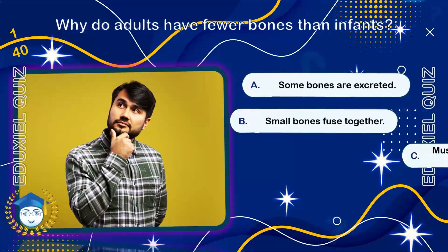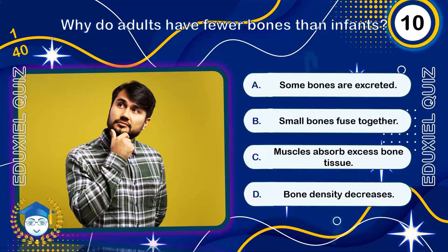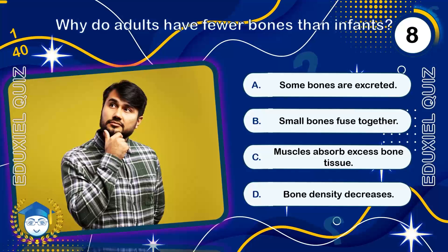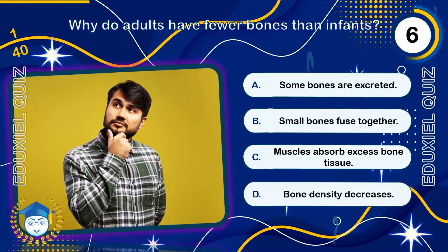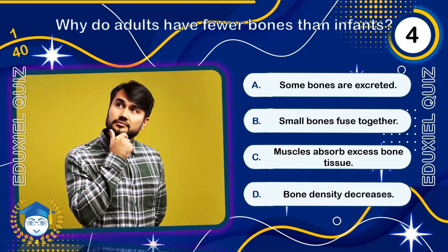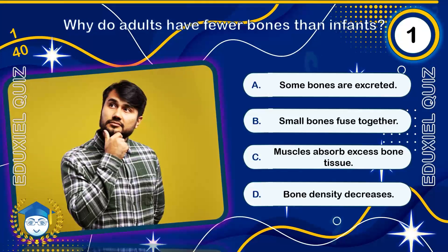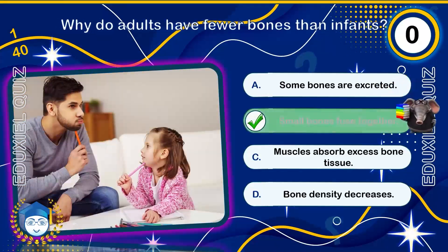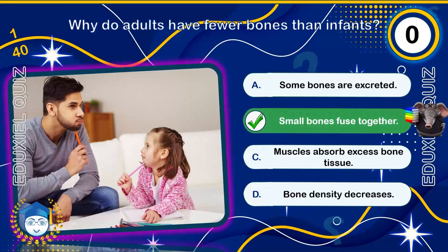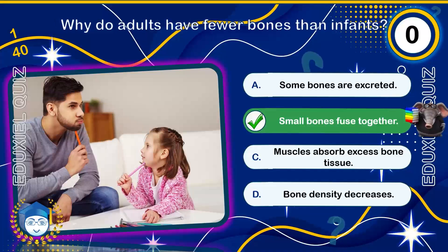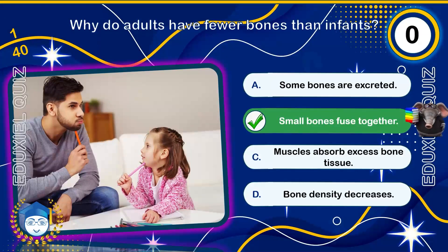Why do adults have fewer bones than infants? Small bones fuse together. Bones like those in the skull and the pelvis are initially separate pieces of cartilage and small bones that ossify and fuse together as the body grows.